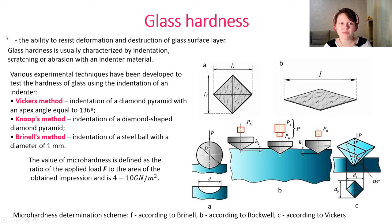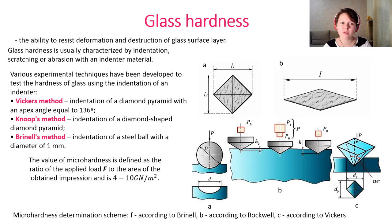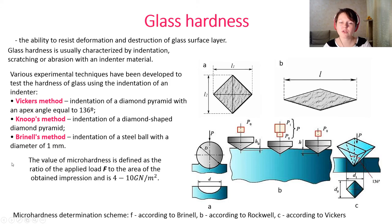The second property is glass hardness — the ability to resist deformation and destruction of the glass surface layer. Glass hardness is characterized by indentation, scratching, or abrasion with an abrasive material. Several methods have been developed: the Vickers method (indentation of a diamond pyramid with a specific apex angle), the Knoop method (indentation of a diamond-shaped pyramid), and the Rockwell method (indentation of a steel ball with 1 mm diameter). The value of micro-hardness is defined as the ratio of the applied force to the area of the impression.